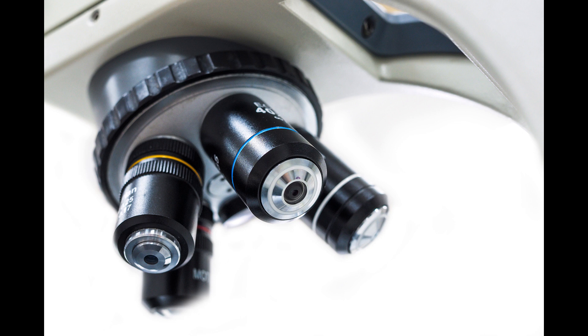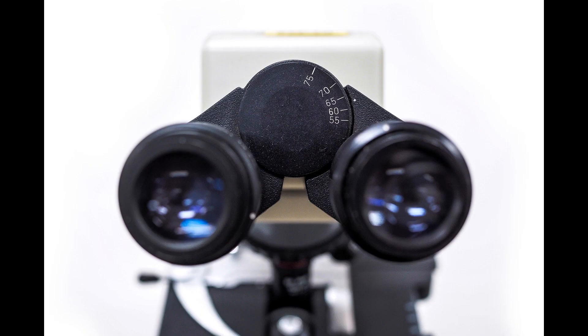Its magnifying power is etched on the side of the lens, which are 4x, 10x, 40x, or 100x. The eyepiece is the lens that you look through.